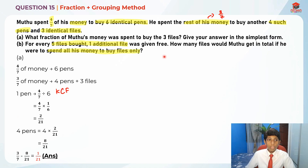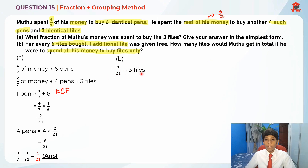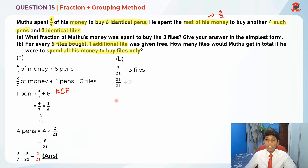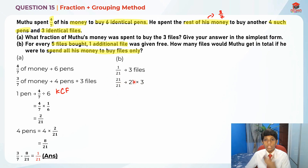For part B, we know that one-over-twenty-one of his money buys three files. If we scale that up to twenty-one-over-twenty-one, which is all his money, we multiply: twenty-one times three equals 63 files. So if Muthu spent all his money on files only, he could buy 63 files.